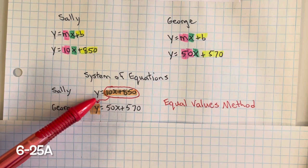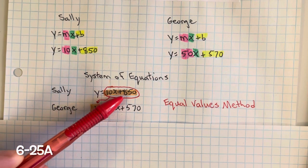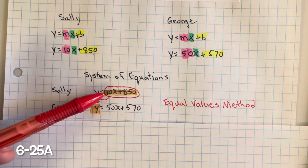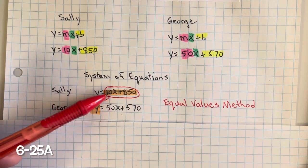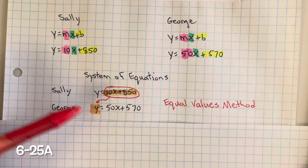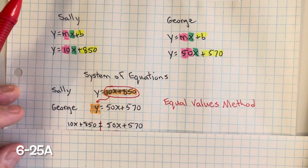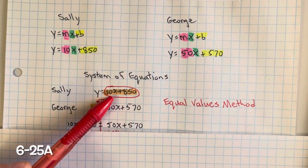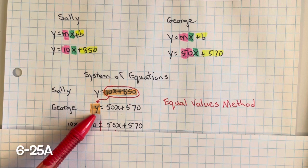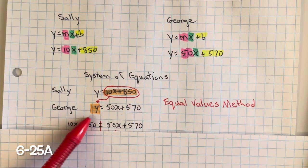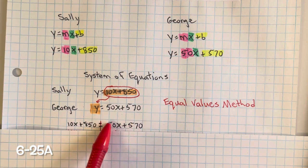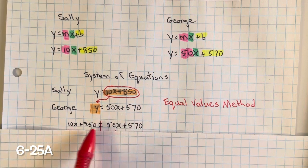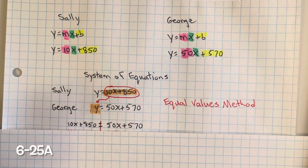The equal values method is when you set each equation equal to each other. Since both of these equations are in y equals mx plus b form, Sally's equation is y equals 10x plus 850. If that's what y equals, we can plug it into George's equation. So here is Sally's: 10x plus 850. That's what y equals. And here's George's equation. They're equal to each other because we want to find out when they will have the same score.